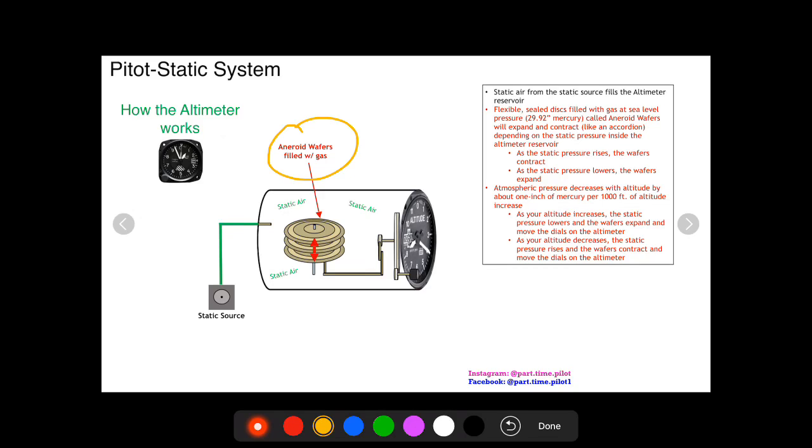So if the static air surrounding this flexible balloon accordion thing goes up, now the pressure outside of the wafer is higher than what's in the wafer because the pressure inside the wafer always stays the same at sea level pressure.